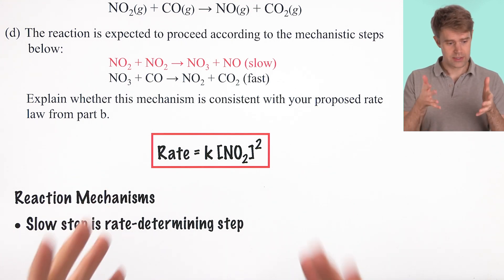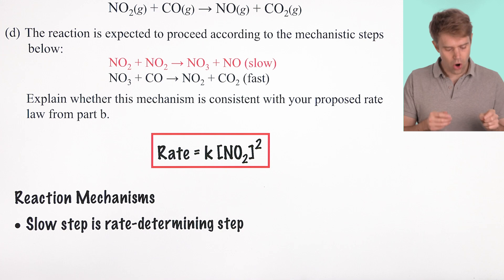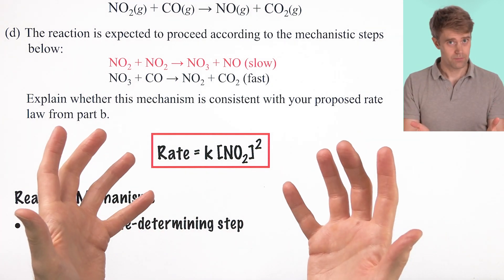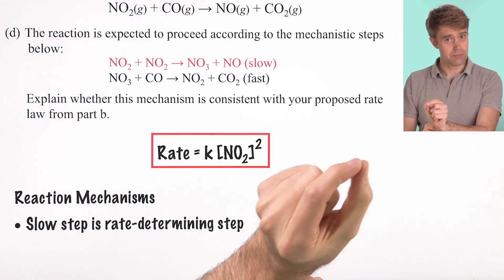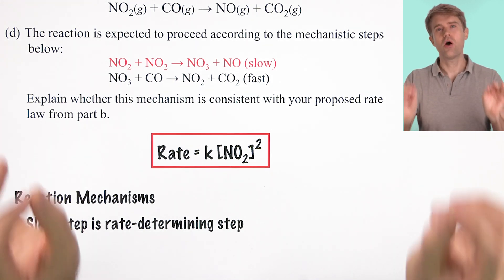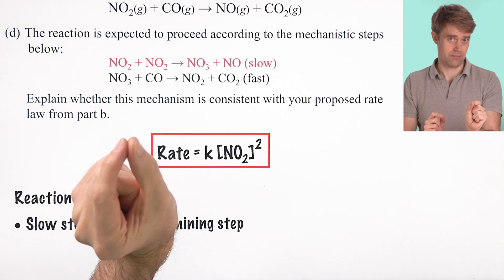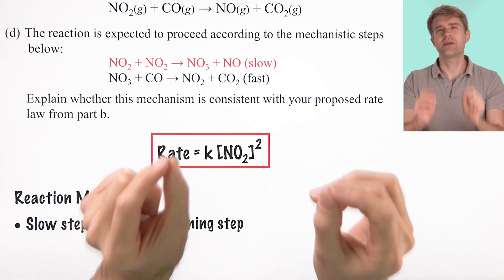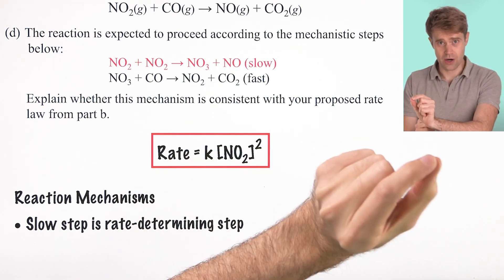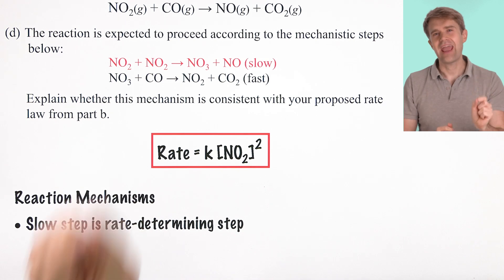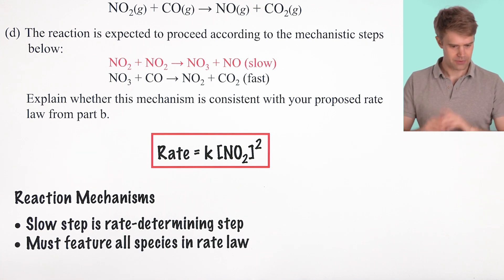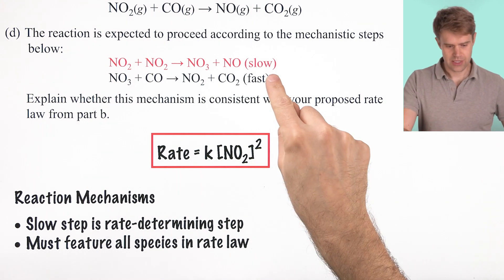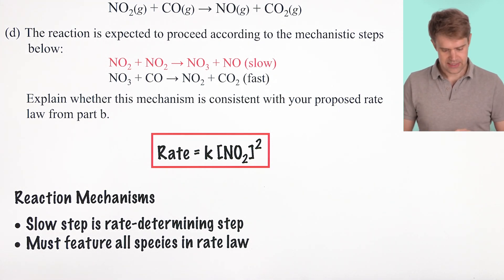The first is the slow step is going to be the rate determining step. That means just what it says. It's the step in the sequence that determines the overall rate of the reaction because it's the one that takes the longest to complete. If we think about an overall reaction as a series of smaller steps, the overall reaction can't go any faster than the slowest step. You can have a variety of steps that are really fast. But it doesn't matter how fast those individual steps are, the overall reaction can't go any faster than the slowest step. Which is why the slow step is the rate determining step.